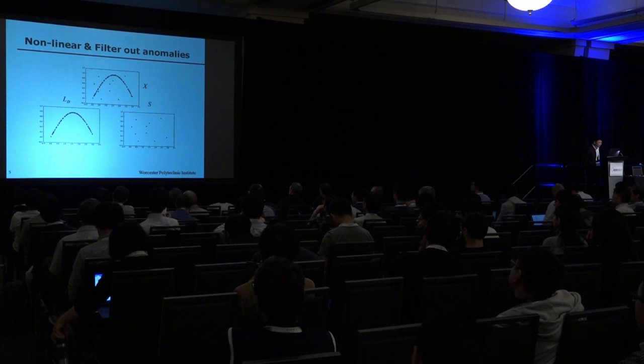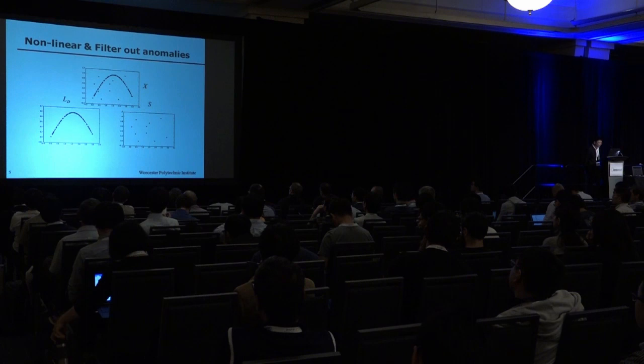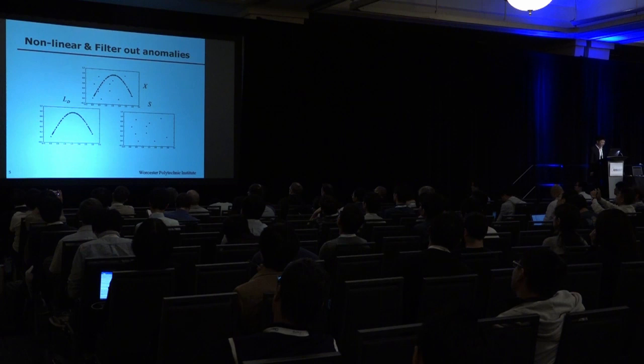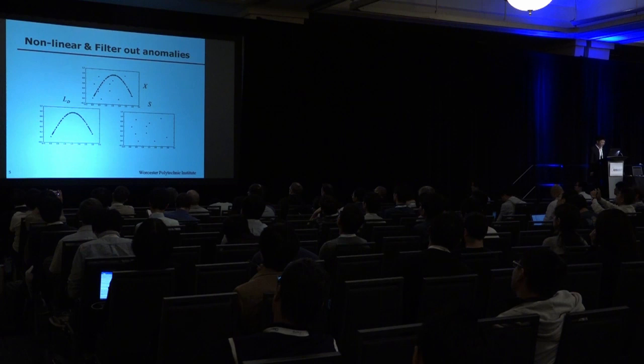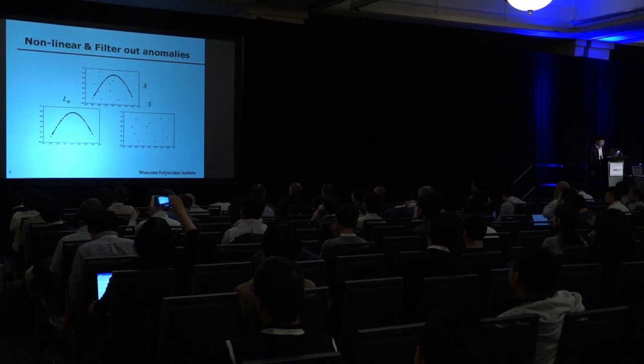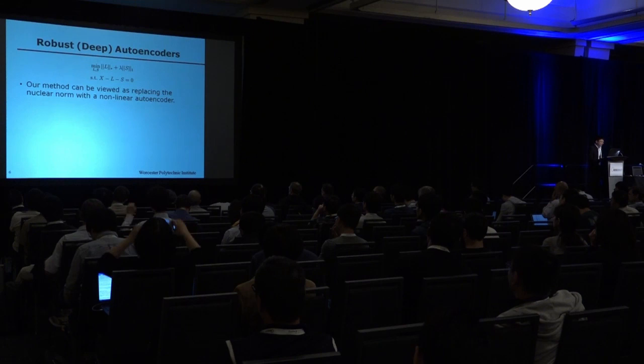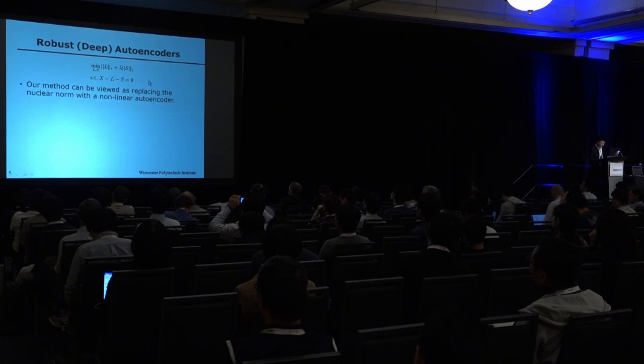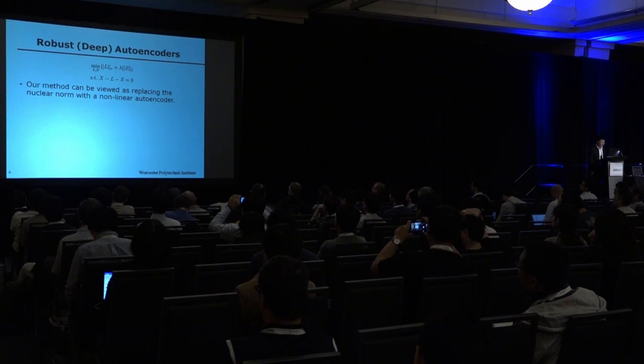We assume our data lies near a non-linear manifold but also contains anomalies. We follow the idea of robust PCA and split the data into L and S, where L can be accurately represented by the hidden layers of an autoencoder, and S contains anomalies. Our method can be viewed as replacing the nuclear norm — the linear projection — with a non-linear autoencoder.